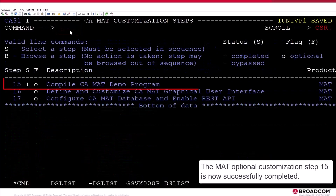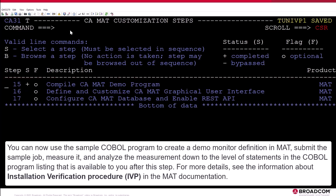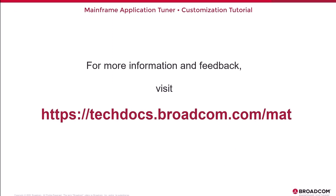The MAT Optional Customization Step 15 is now successfully completed. You can now use the sample COBOL program to create a demo monitor definition in MAT. Submit the sample job, measure it, and analyze the measurement down to the level of statements in the COBOL program listing that is available to you after this step. For more details, see the information about Installation Verification Procedure, IVP, in the MAT documentation. MAT customization optional steps for subsystem configuration are completed. For more information and feedback, visit techdocs.broadcom.com/mat.